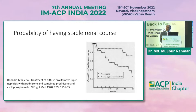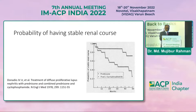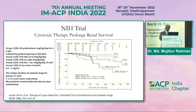Looking at the history of treating lupus nephritis, a study published in 1978 showed that prednisolone plus cyclophosphamide gave better results in preventing or stabilizing the renal course of the disease. This is the NIH trial — a series of trials sponsored by the National Institute of Health of the USA — and it was shown that IV cyclophosphamide is very important for induction of remission of lupus nephritis.